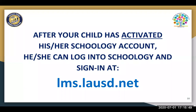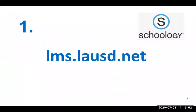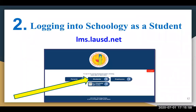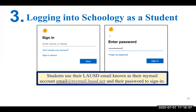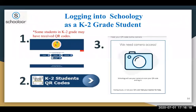Next, we will discuss the steps to log in. One, your child will go to lms.lausd.net to log into Schoology. Two, your child will see a page that looks like this. He or she will need to select Students. Step three, your child will need to enter their email known as their MyMail and their password to sign in. If the student is a kindergarten to second grade student, they may have received a QR code. They can use the camera on their device, hold the QR code to the camera, and then log in.